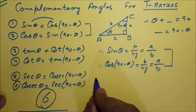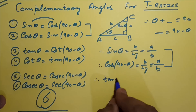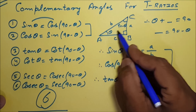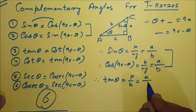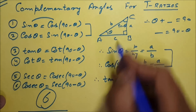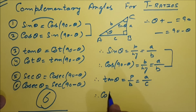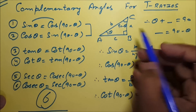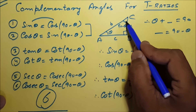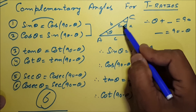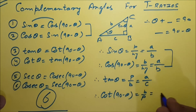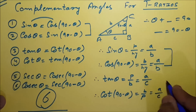Now you can check for tan theta also. Tan theta is perpendicular upon base — for angle theta, the perpendicular is A and the base is C. For cot(90 minus theta), the formula is base upon perpendicular. For the angle 90 minus theta, the base is A and the perpendicular is C, so they are the same.